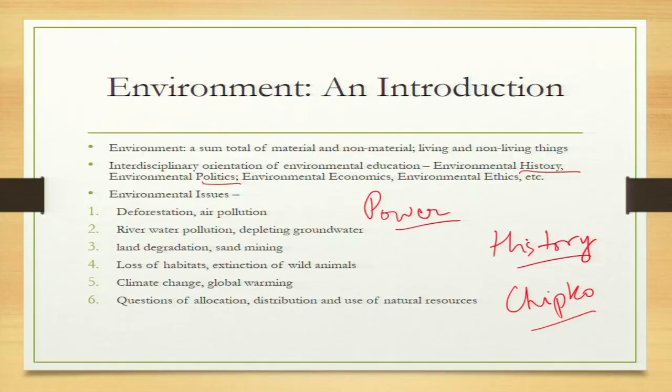Climate change and global warming are the two most popular terms around environment. We often hear about climate change, and recently COP 27 took place. COP stands for Conference of Parties — countries from all over the world come together in a summit to discuss what needs to be done to conserve nature. The last point is about the question of allocation, distribution, and use of natural resources.